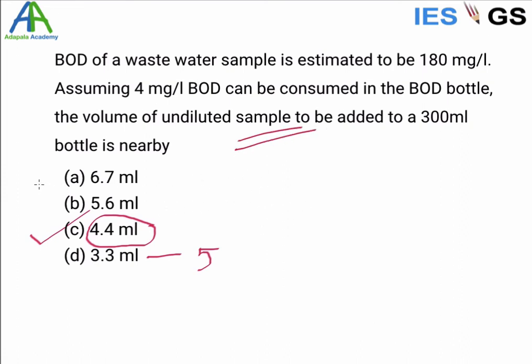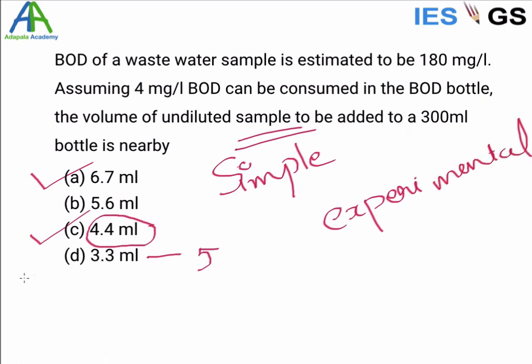So if UPSC is going by simple logic about the limit of the oxygen available and that can be consumed, the answer can be 6.6 ml. Or UPSC is going with the experimental procedure, the most appropriate sample size will be 4.4 ml from the options available. So the answers can be either A or C.